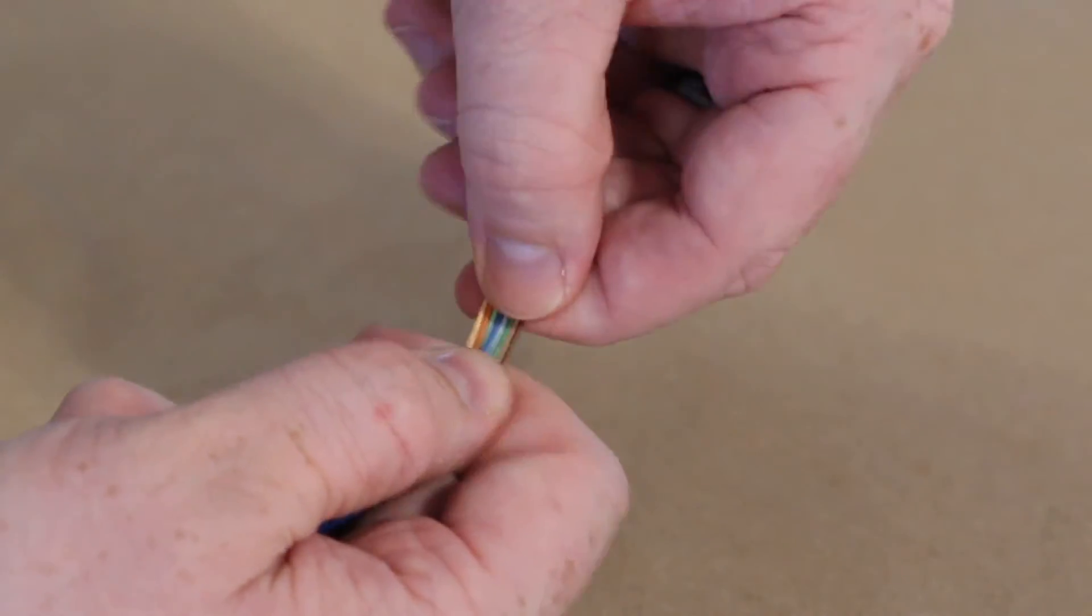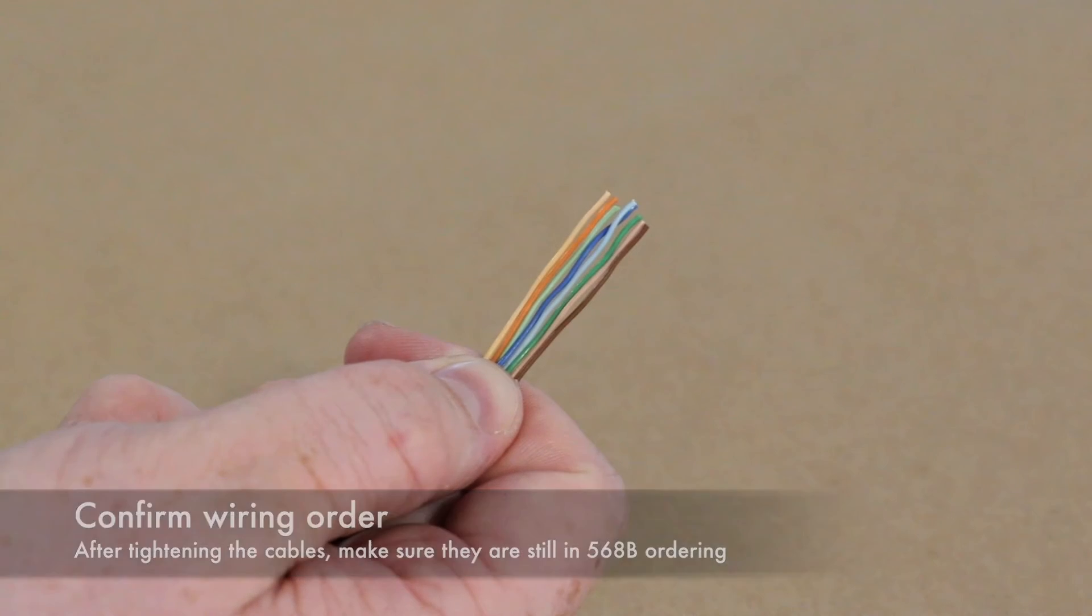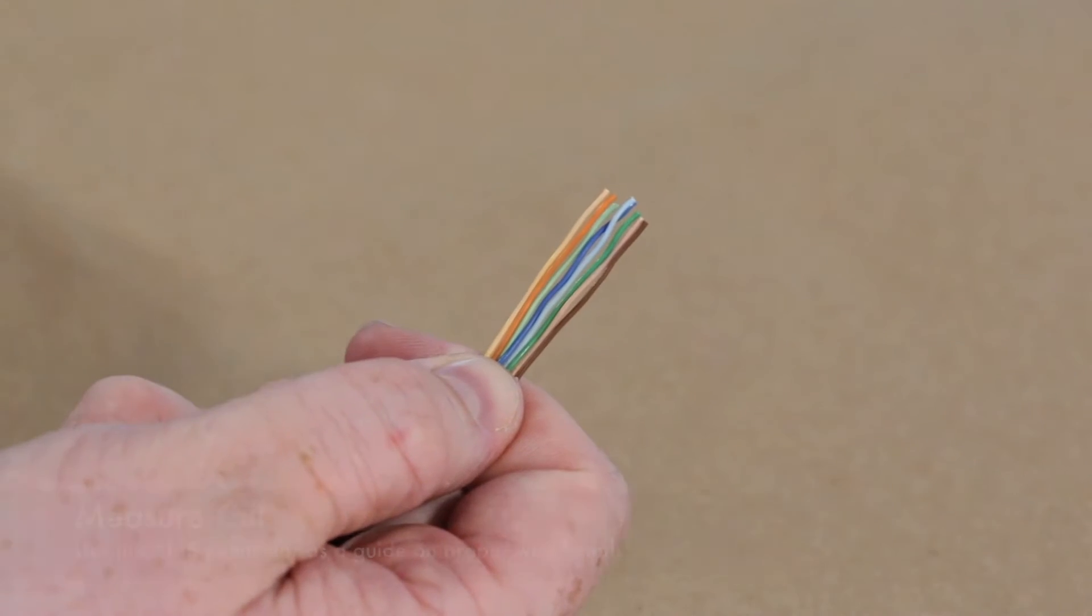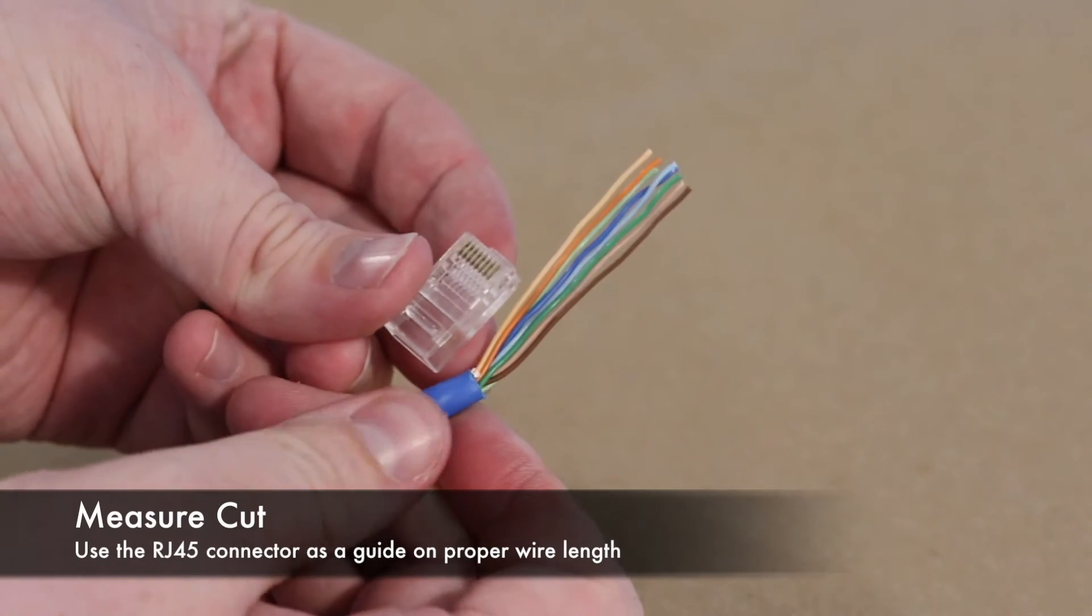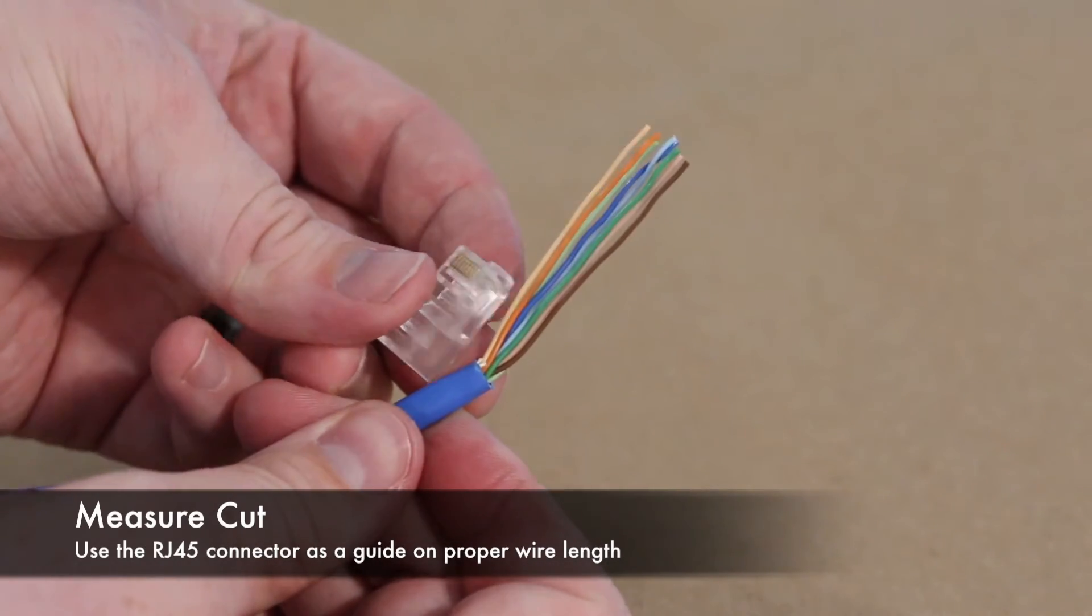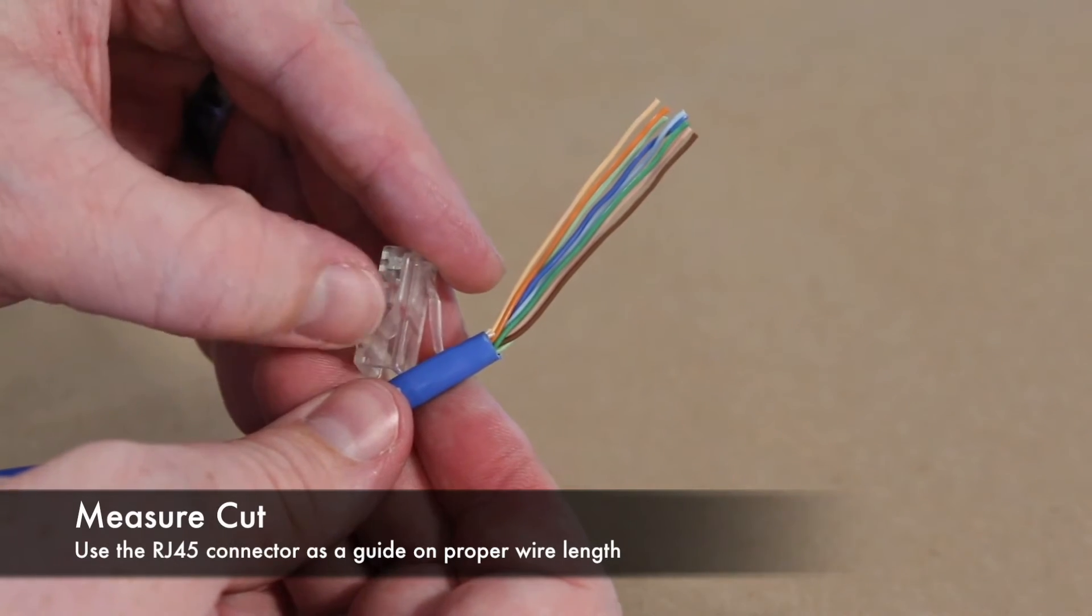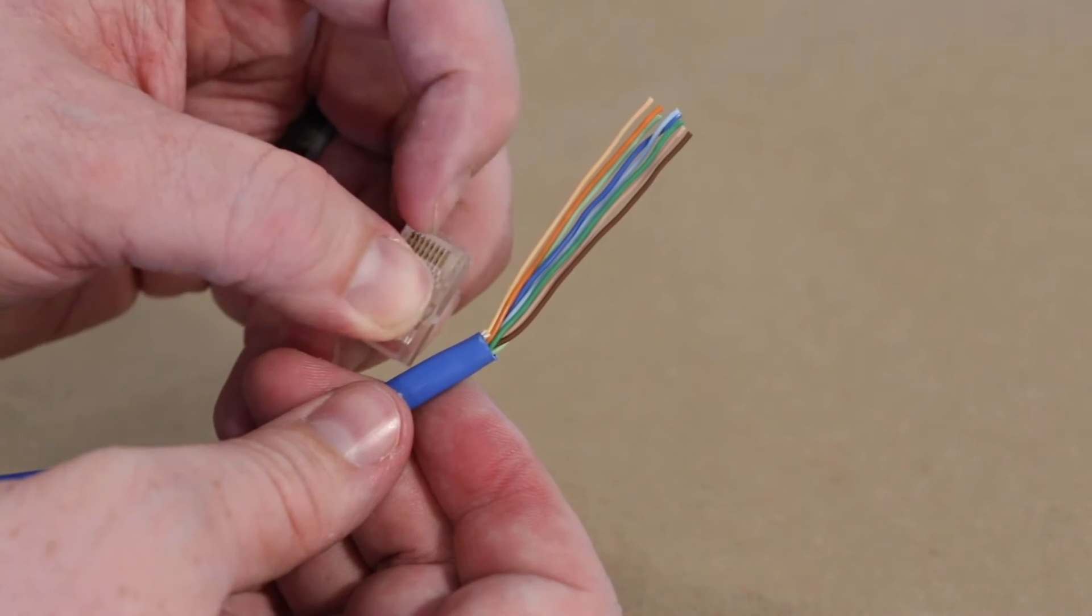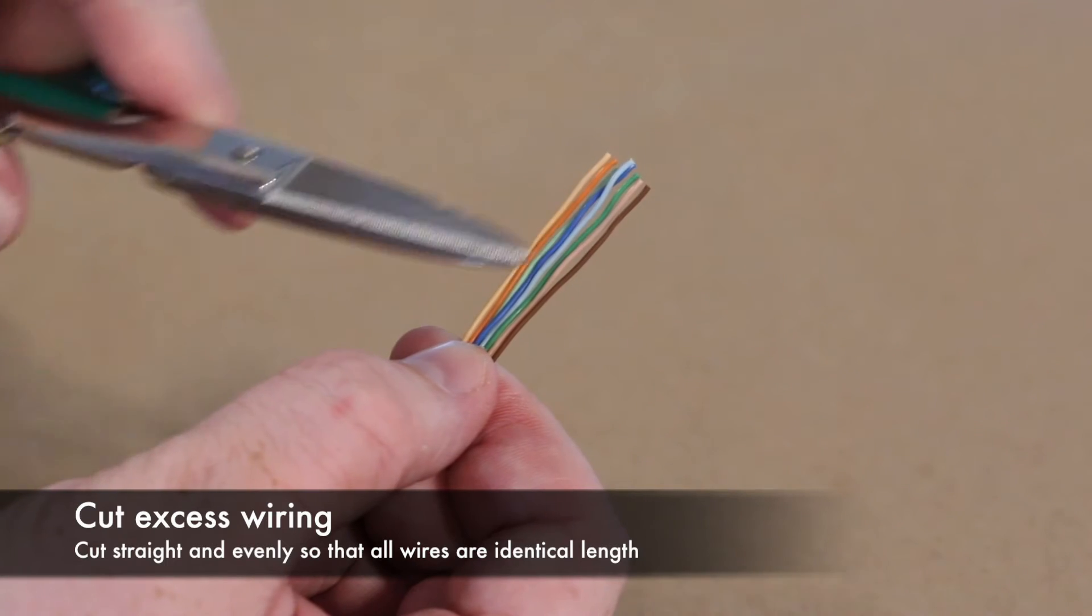Now that I've got them tightly run together I've confirmed that the wiring order is still the 568B. I can now cut off the excess here. Now to know how much to cut off you're going to want to line up the connector with the cable here. So you want the sheathing here to fit in the clip of the RJ45 connector but also have the wires long enough where they press right to the end of this connector for the best connection. So now I'm going to cut off the excess cabling.